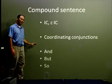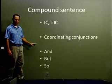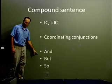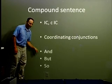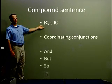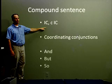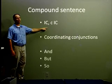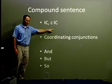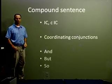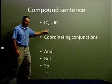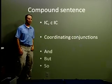So up here with my formula, I would have independent clause, comma, 'and,' independent clause. Or I could have independent clause, comma, 'so,' plus independent clause. Let's look at some examples of compound sentences.